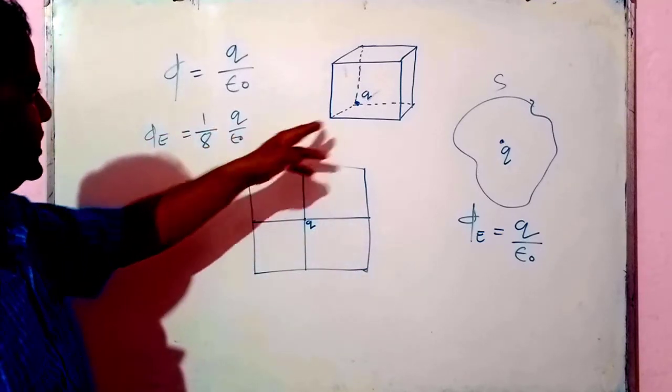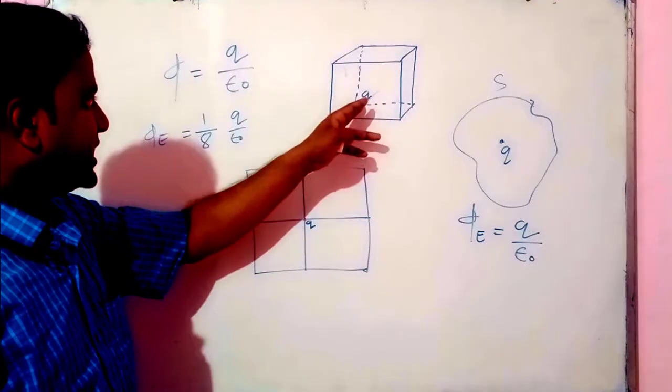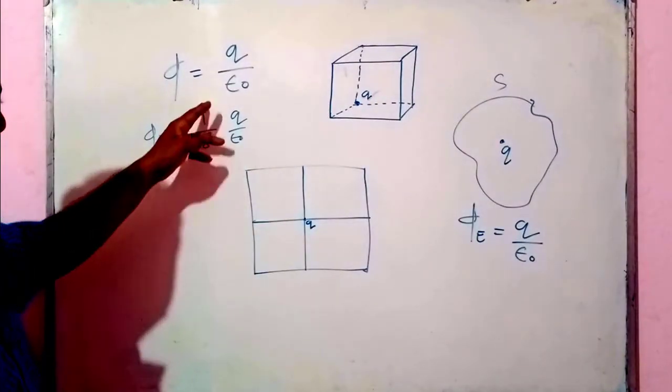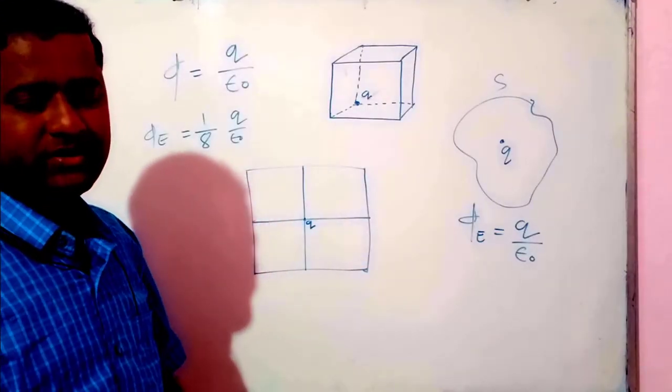Therefore, in our question, the total flux when the charge is at one corner is one by eight q by epsilon naught. Okay? This is very simple.